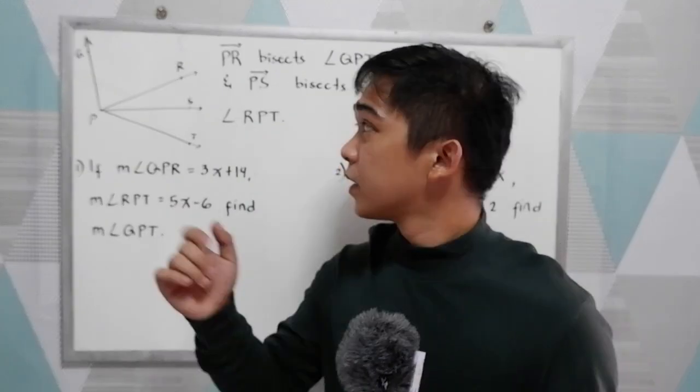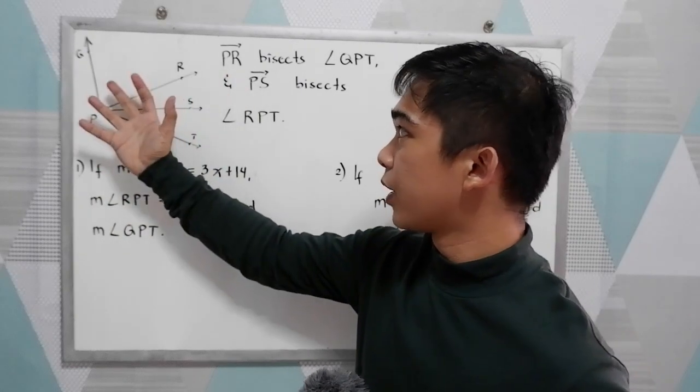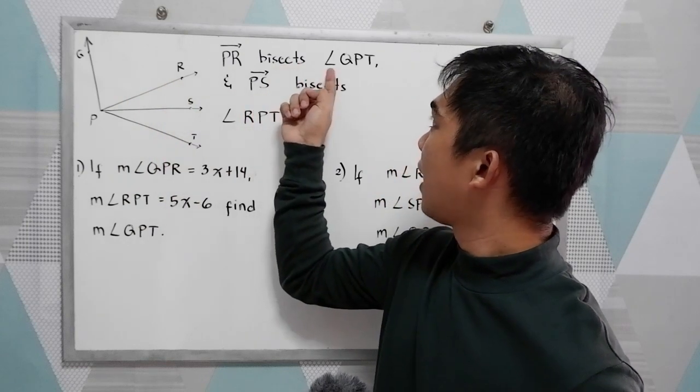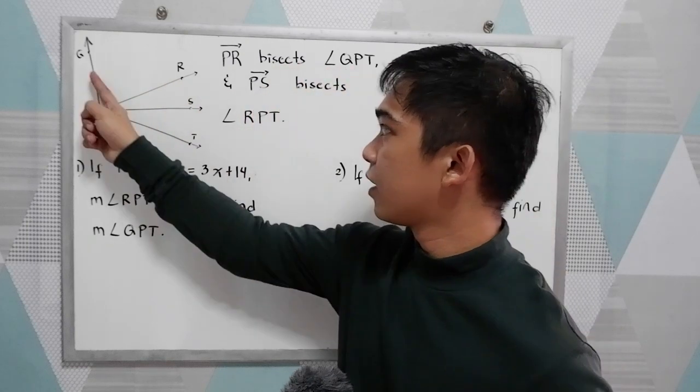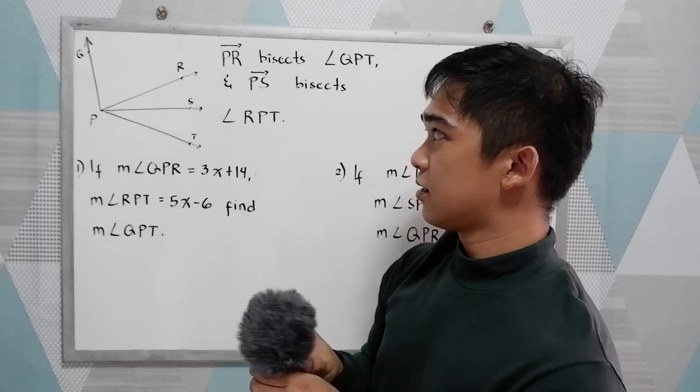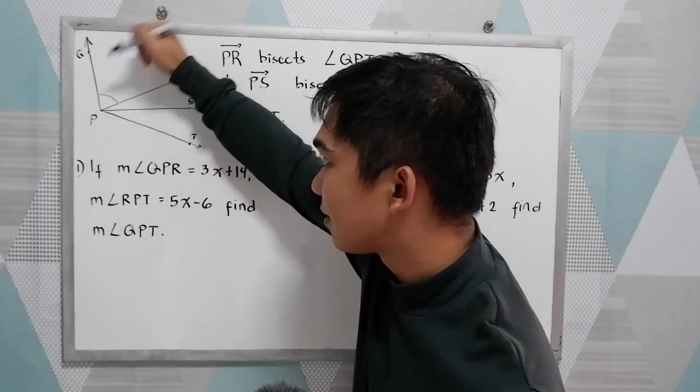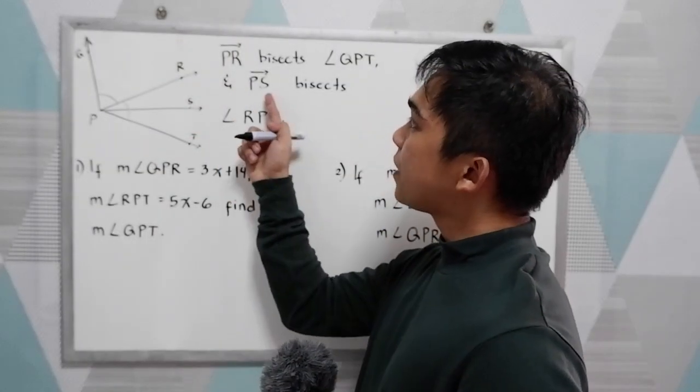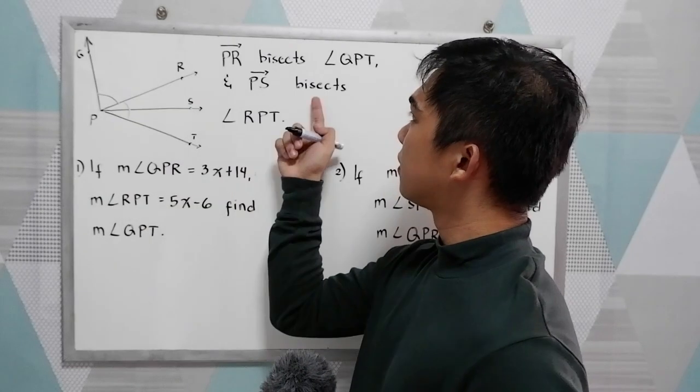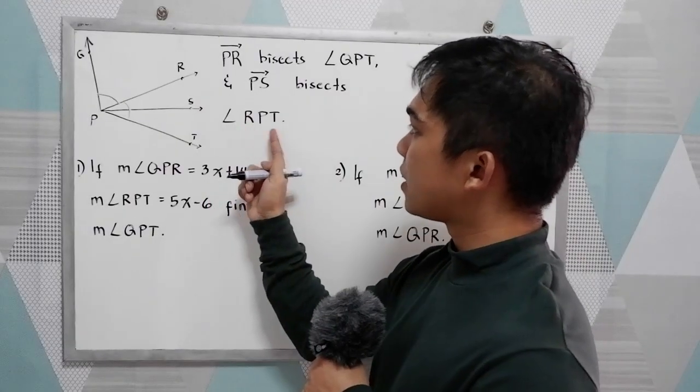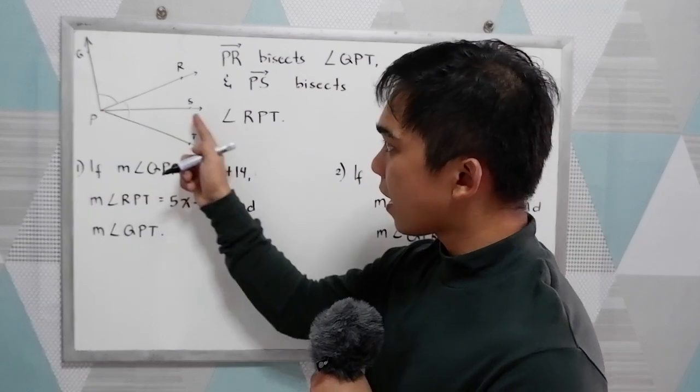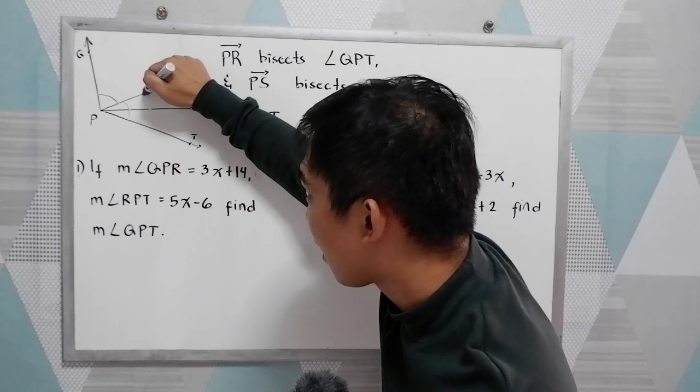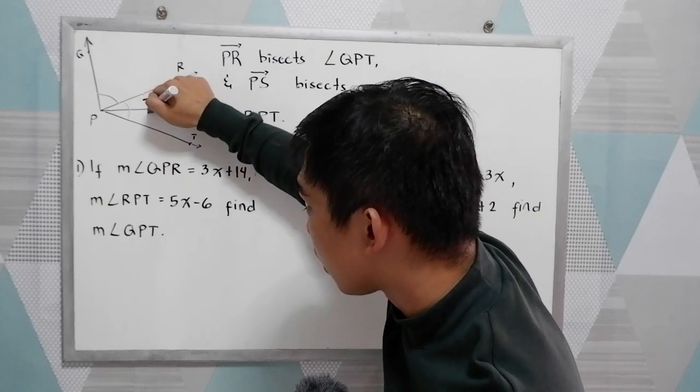Now, another exercise. In this illustration, ray PR bisects angle QPT. That means this angle equals the other angle. And PS bisects angle RPT, so ray PS bisects RPT. That means this angle is also equal to this angle.